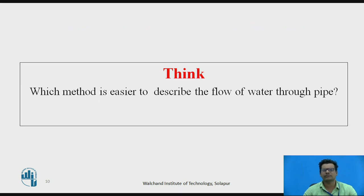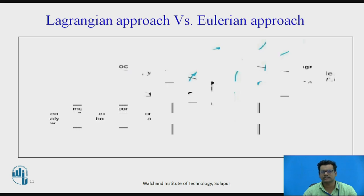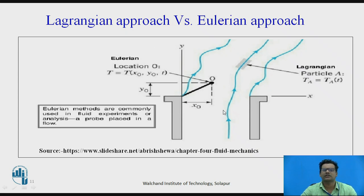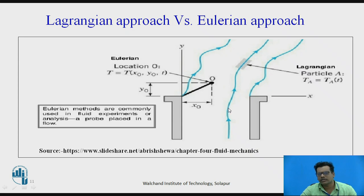Now, think about which method is easier to describe the flow of water through a pipe. You know the two types: Lagrangian and Eulerian. The answer is the Eulerian approach. Consider a chimney where smoke particles are coming out. In the Lagrangian approach, we fix on one particle, track it, and measure the temperature of that fluid particle as it moves through the flow.